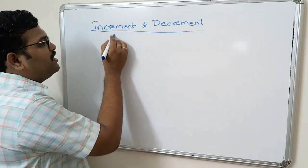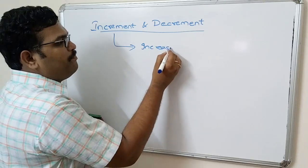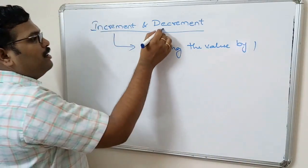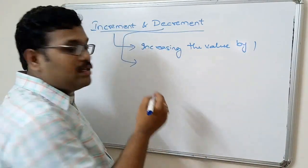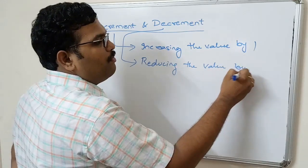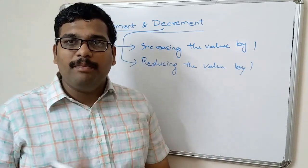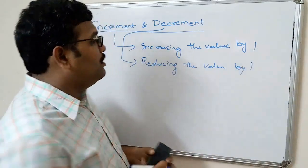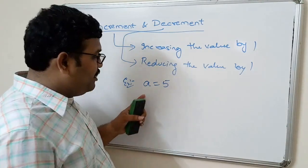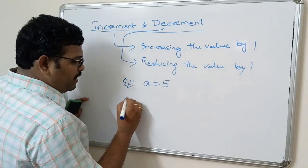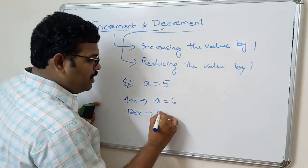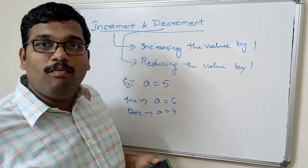The name itself indicates: increment means increasing the value by 1, and decrement means reducing the value by 1. So either increasing or reducing is done only by the value 1. For example, if variable a holds a value 5, after increment a will be 6, and after decrement a will be 4. That means only one difference will be done.